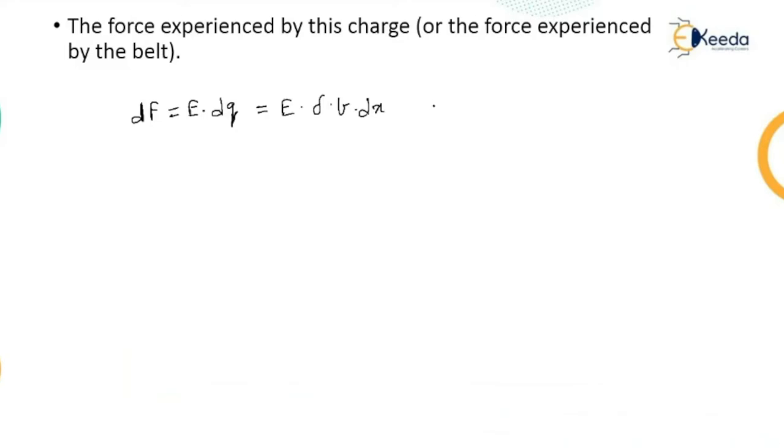The value of DQ is placed here. If I integrate both sides, the integration of DF gives you F which is equal to sigma B integration of E DX. This integration E DX is nothing but the voltage, and therefore F is equal to sigma B multiplied by voltage V.